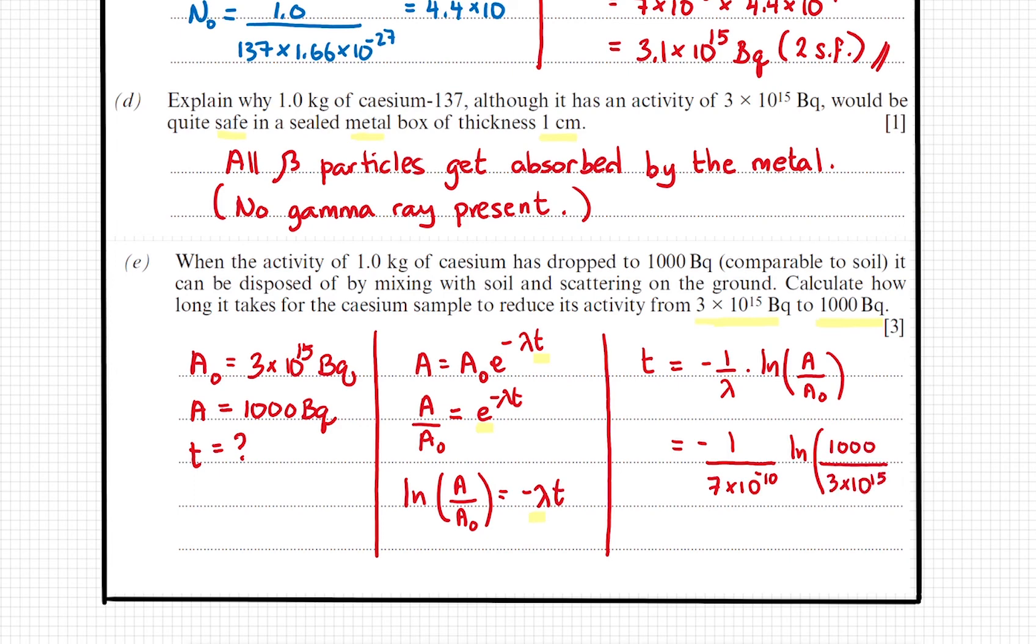Bring the decay constant to the other side. We arrive at 4.1 times 10 to the power of 10 seconds. So this tells us that after 4.1 times 10 to the power of 10 seconds, the activity of the sample has dropped to 1,000 Becquerels.